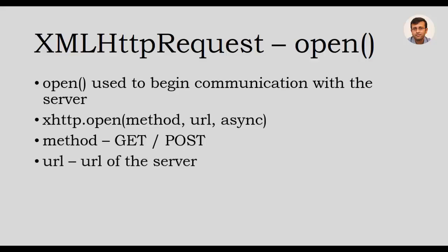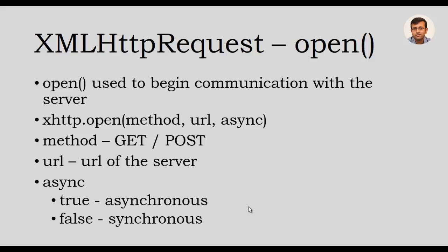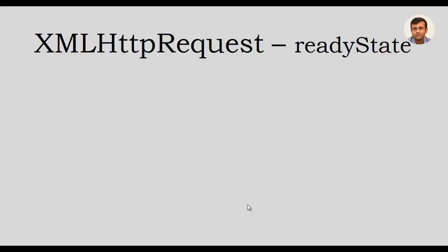The URL parameter is the URL of the server-side program. The third argument is async, which is used as a flag. If it is true, the communication is asynchronous, and if it is false, the communication is synchronous. Since the XMLHttpRequest object is used for Ajax, this argument will typically be true, and false is rarely used.